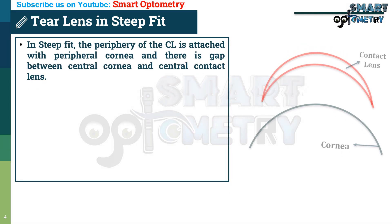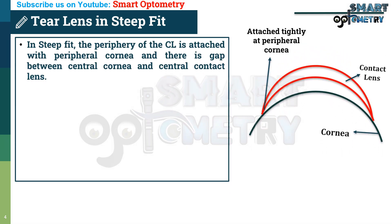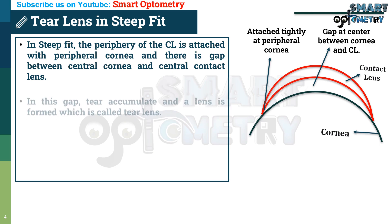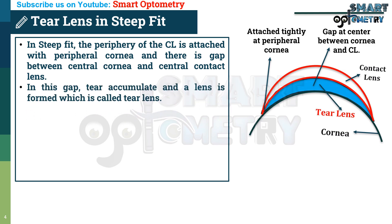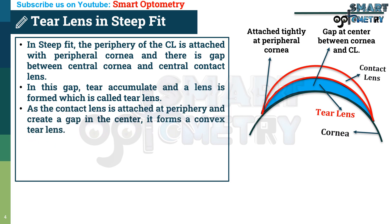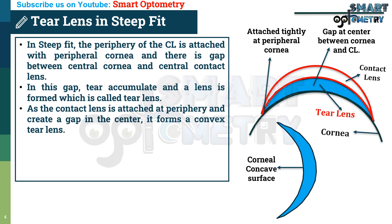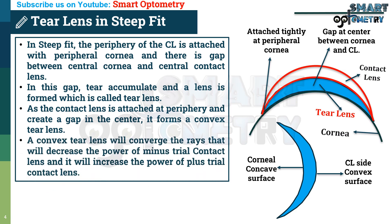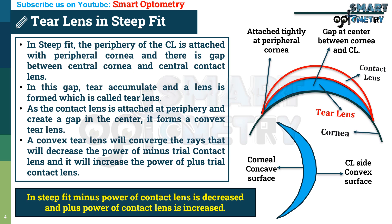In steep fit, the periphery of the contact lens is attached with the periphery of the cornea, and there is a gap between the central anterior surface of the cornea and the central posterior surface of the contact lens. Tear accumulates in this gap forming a convex tear lens — precisely, concavo-convex — where the inner corneal side is concave and the outer contact lens side is convex. A convex tear lens converges rays, which decreases the power of a minus trial contact lens and increases the power of a plus trial contact lens.